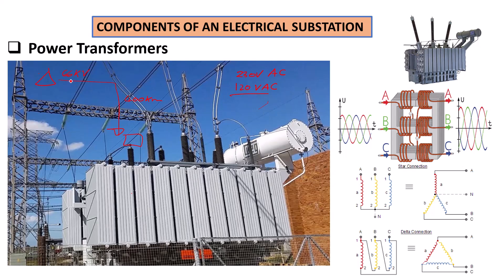...you're going to have a lot of losses, because 66 kilovolt cannot be transmitted with a low current — it has to be transmitted with a high current to maintain the power. This is why for long transmission lines, you have to increase the voltage to 400 kilovolt or even 765 kilovolt.